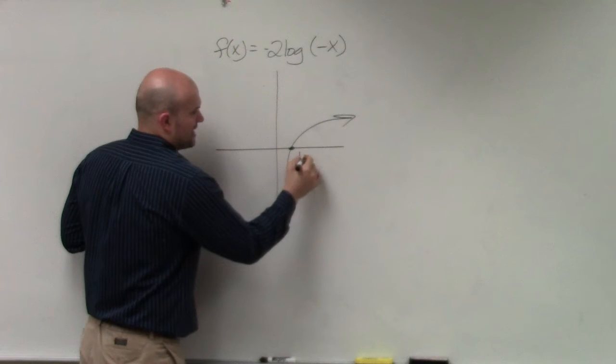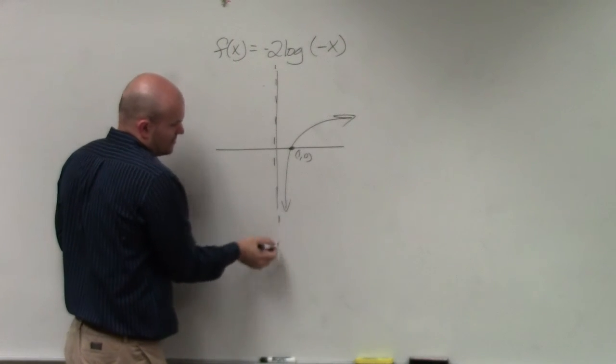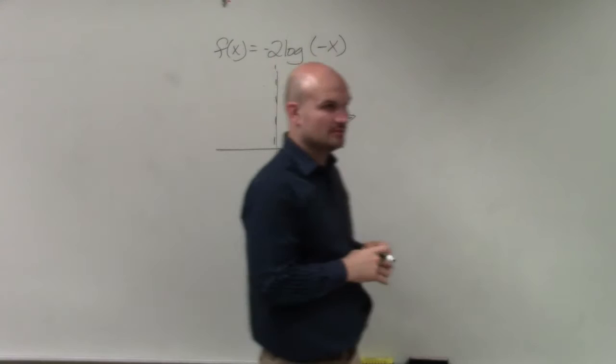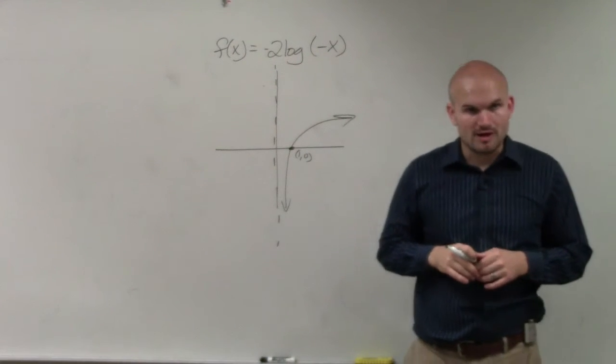And it crosses at 1 comma 0. And it has a vertical asymptote, right? Correct?